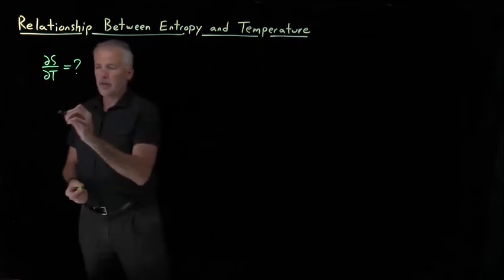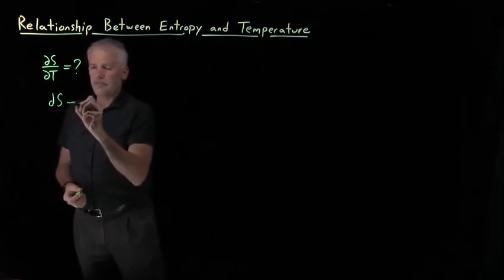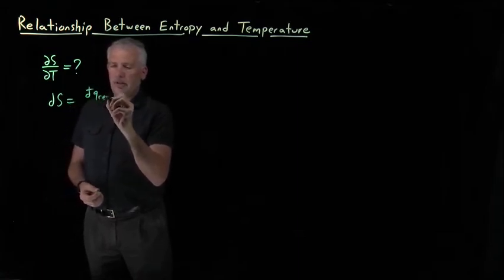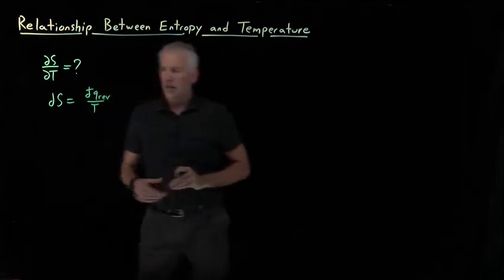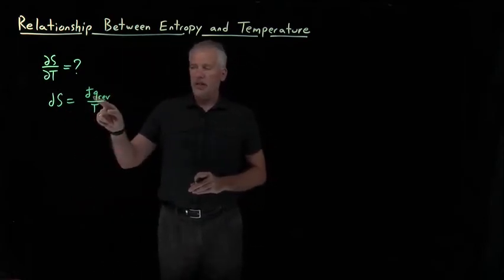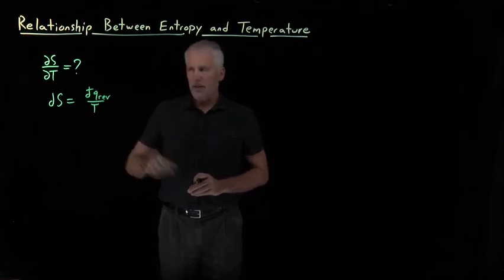It turns out we can make quite a bit of progress determining what this rate of change of the entropy with the temperature is, and we can start with the Clausius theorem. That is a relationship between the entropy and the temperature. Change in entropy is the heat for reversible process divided by the temperature.